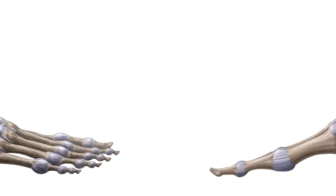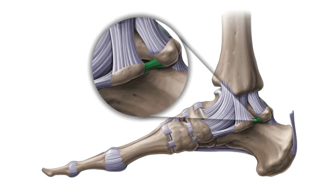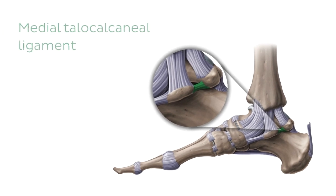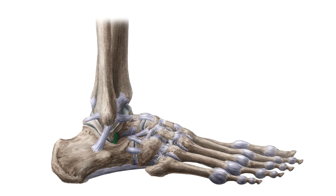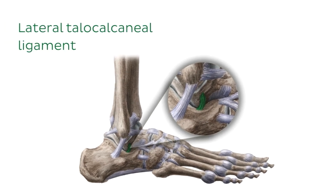The third and final group of ligaments is specific to the subtalar joint, so all run between the talus and the calcaneus. There are three of these ligaments. The first is seen on the medial view of the ankle — here is the talus and here is the calcaneus. Since we're on the medial aspect and we know the two bones the ligament connects, we identify this as the medial talocalcaneal ligament. The other two ligaments can be seen on the lateral view. On the lateral side, the highlighted ligament is called the lateral talocalcaneal ligament.